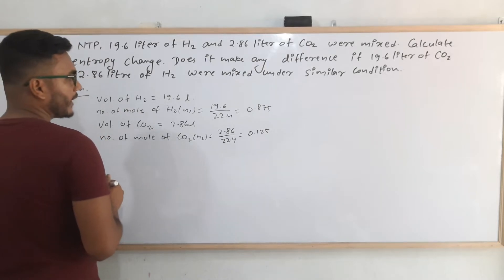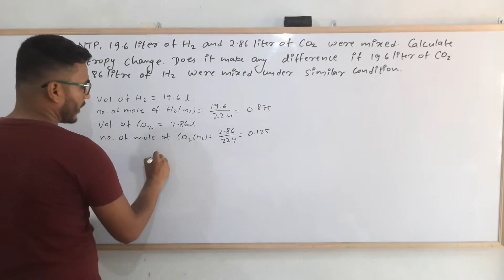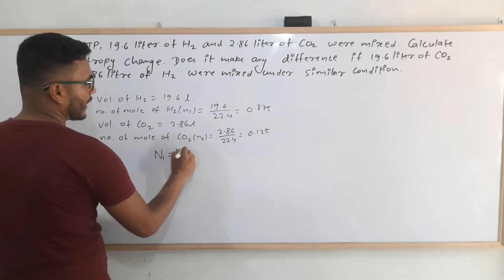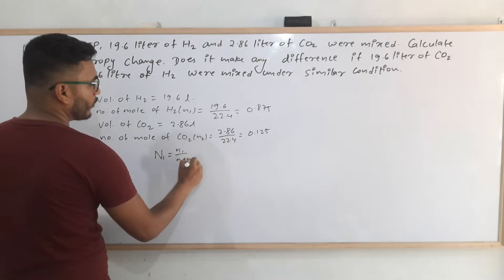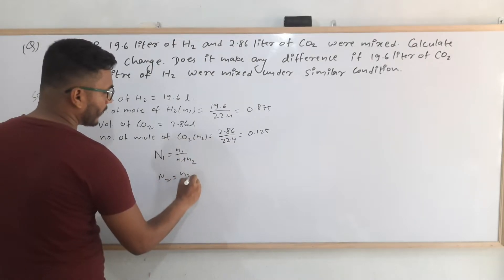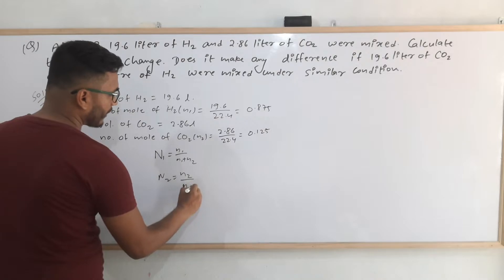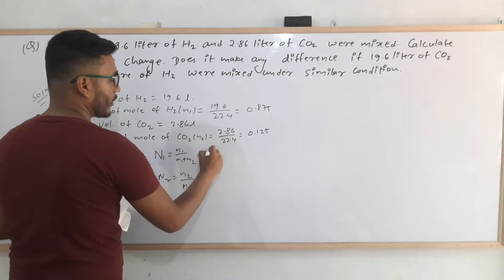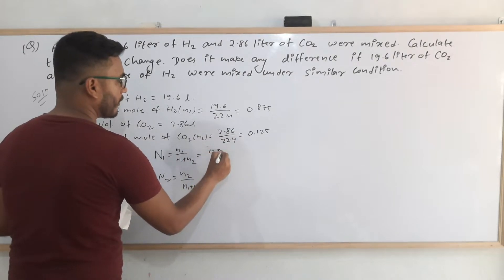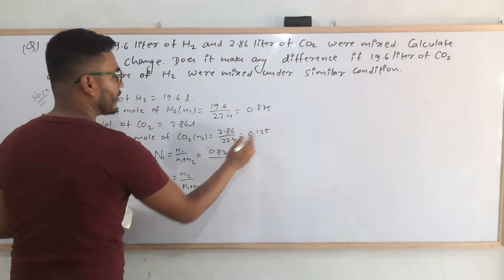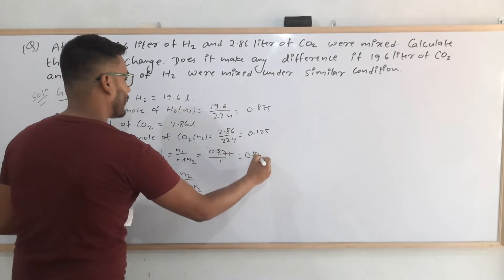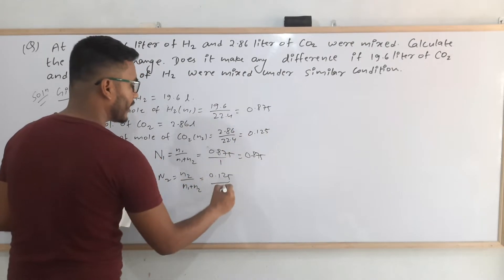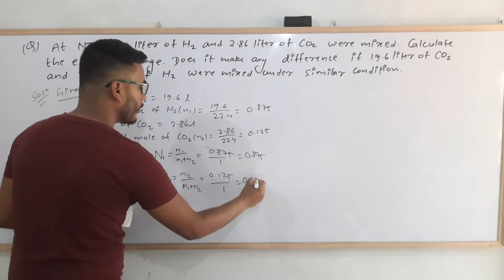Now we calculate the mole fractions. χ1 equals N1 divided by (N1 + N2), and χ2 equals N2 divided by (N1 + N2). Since N1 + N2 = 0.875 + 0.125 = 1, the mole fraction χ1 = 0.875 and χ2 = 0.125.